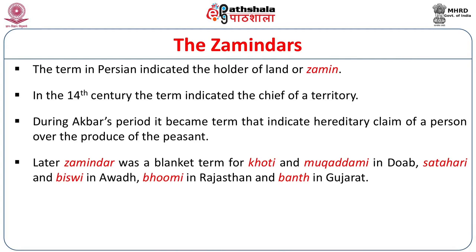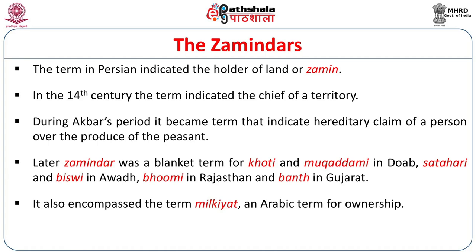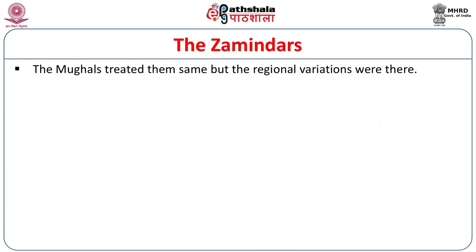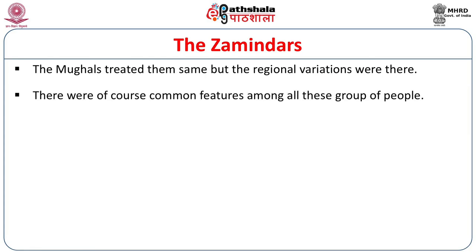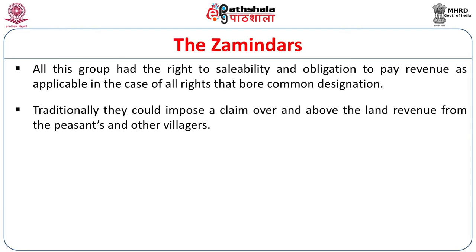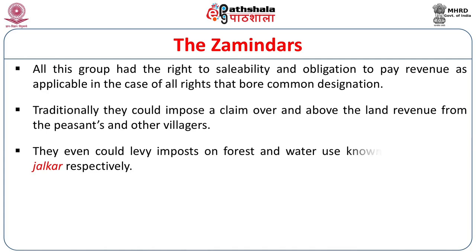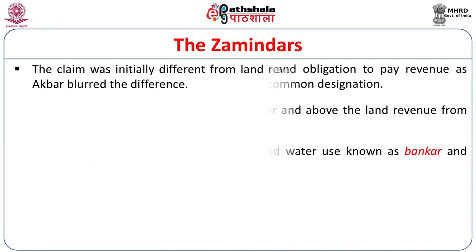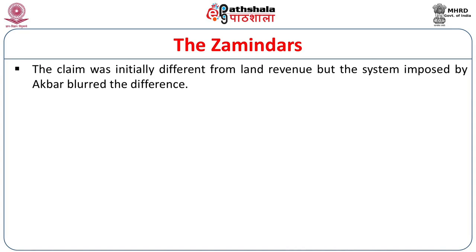Zamindar was a blanket term for khots and mukaddams in Doab, the Satahari and Biswee in Awadh, Bhoomi in Rajasthan, and Banth or Bhant in Gujarat. It also encompassed the term milkiyat, the Arabic term for ownership. The Mughals treated them the same, though regional variation was there. All these groups had the right of saleability and obligation to pay revenue. Any zamindar could sell his right. Traditionally, they could impose a claim over and above the land revenue from peasants. They could even levy impositions on forests or water, known as bankar or jalkar respectively. The claim was initially different from land revenue, but the system imposed by Akbar blurred the difference.